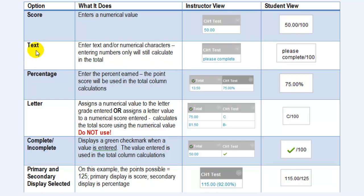When you set the display option as text, this gives you the ability to enter text and or numerical characters. If you enter numbers, they will calculate in the final total. This is what the instructor sees when the text is entered. This is what the student sees.